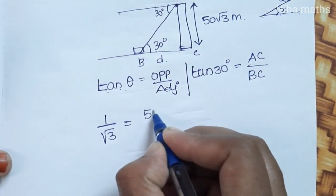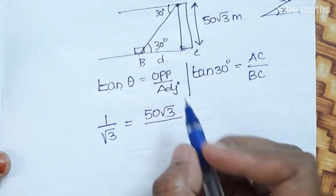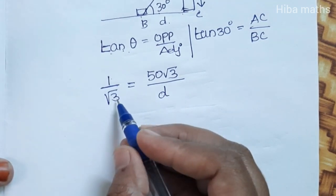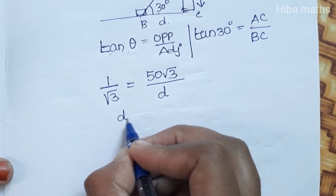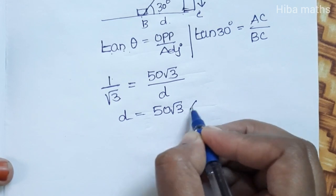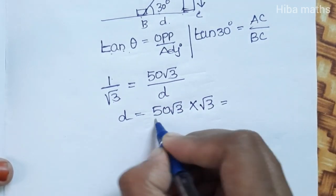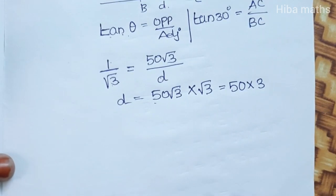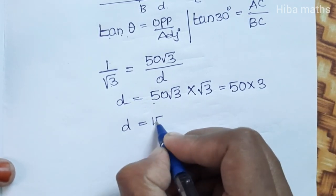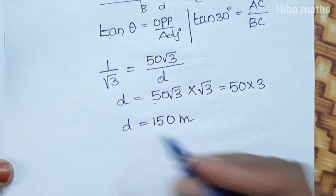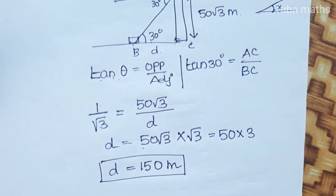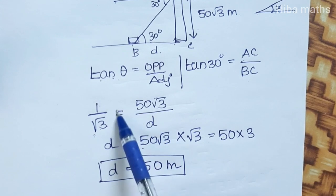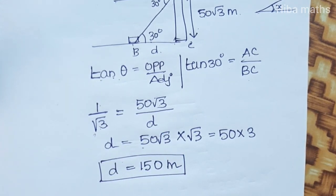Tan 30 equals 1 over root 3, which equals AC over BC. The AC value is 50 root 3. Cross multiplying: BC is equal to 50 root 3 multiplied by root 3. So 50 multiplied by root 3 into root 3 is 3, giving distance equal to 50 times 3, which equals 150 meters. It is easy to apply tan theta as opposite over adjacent — AC over BC — with the AC value and tan 30 value. Cross multiply and you will get the answer. Thank you so much for watching.